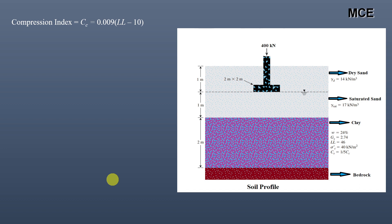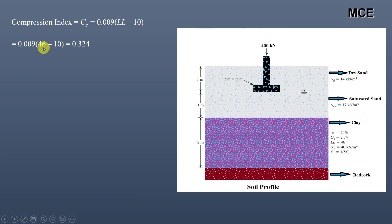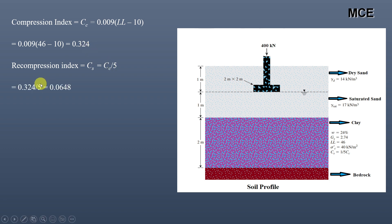The compression index Cc is given by the empirical formula: 0.009 × (LL − 10). With liquid limit = 46, Cc = 0.009 × 36 = 0.324. The decompression index Cr is one-fifth of Cc: 0.324 / 5 = 0.0648.